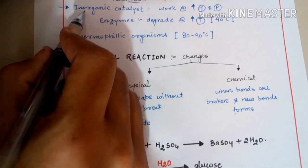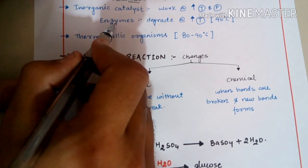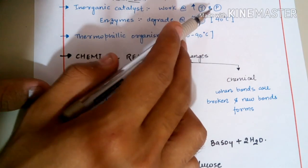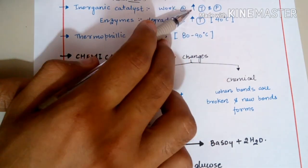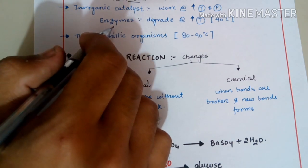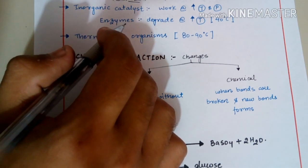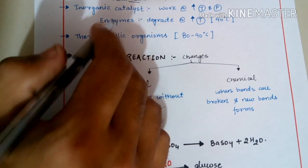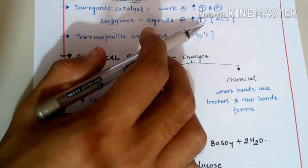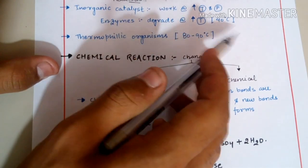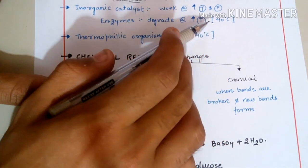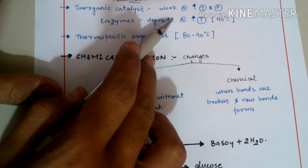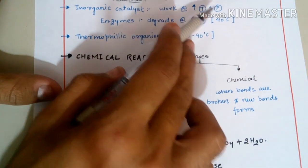The main difference between inorganic catalysts studied in chemistry and biological catalysts (enzymes) is that inorganic catalysts work at very high temperature and pressure. Enzymes, however, work in a biological system with constant body temperature. Being homeothermic, our enzymes degrade at higher temperatures — for example, some human enzymes degrade at around 40°C.